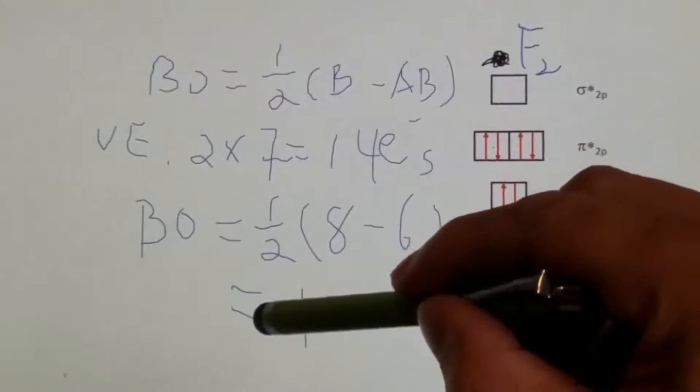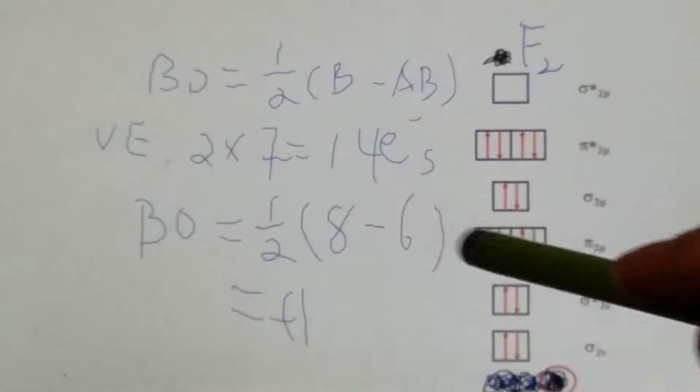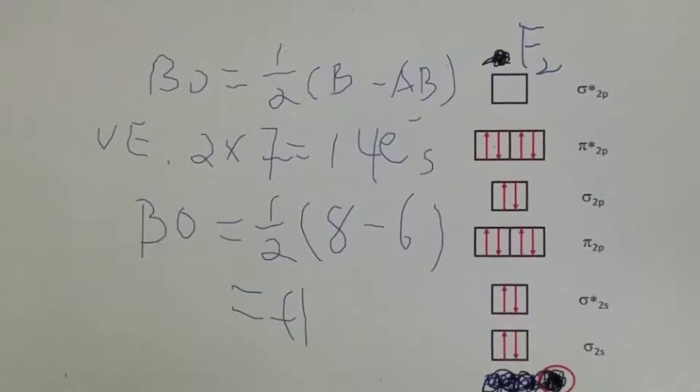Oxygen is plus 2, we just calculated that a while ago, and now fluorine is plus 1.